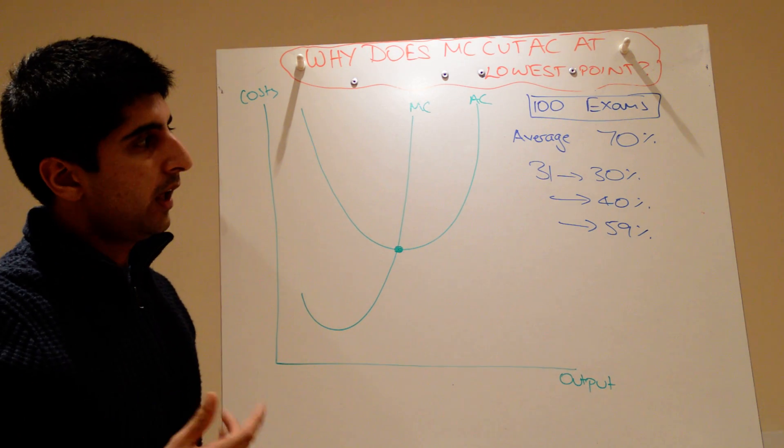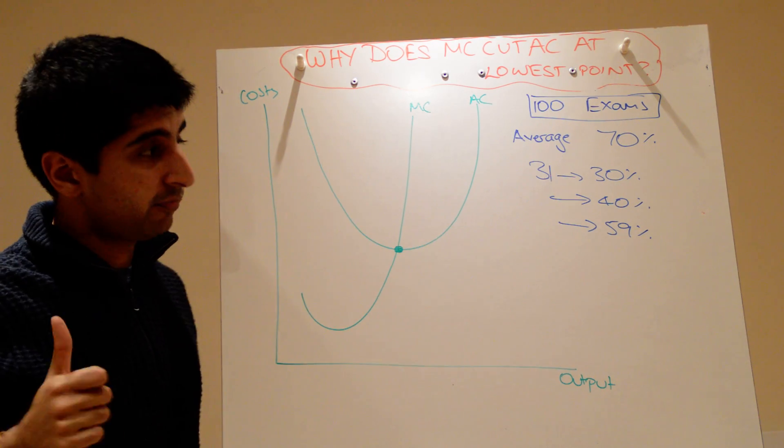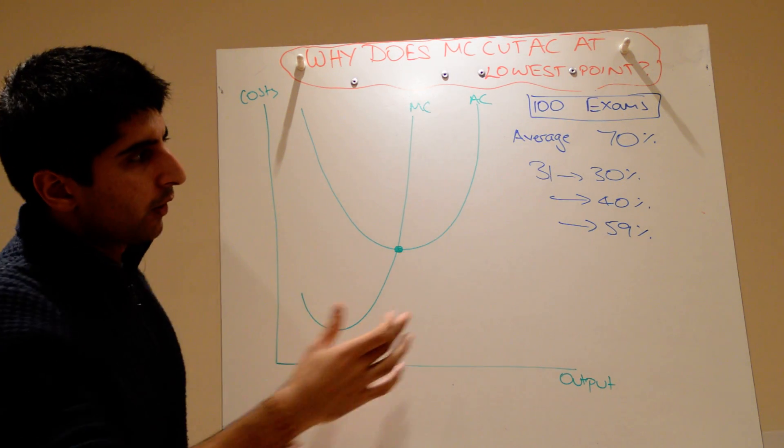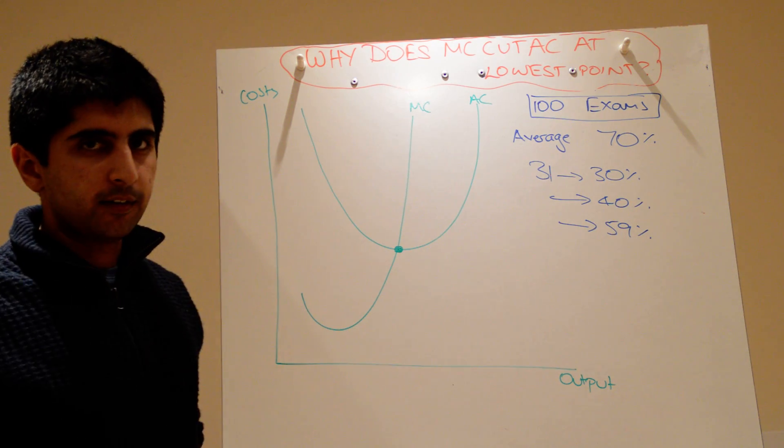That seems to make sense. If every time you're scoring less than the average, your average is going to fall. Fair enough. But now look, let's say your 103rd paper, you score 40% on it.